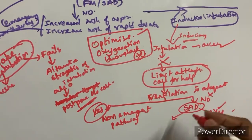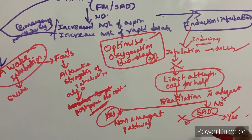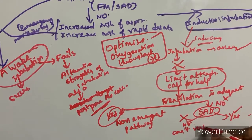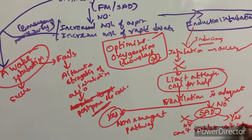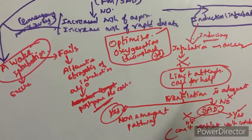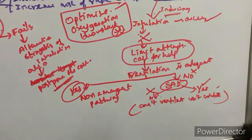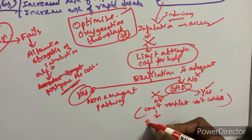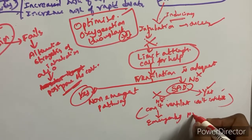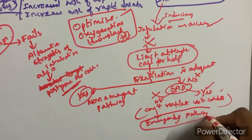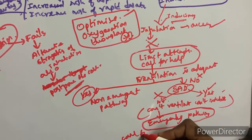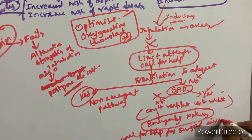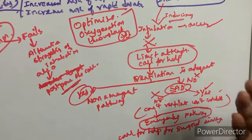If the supraglottic airway device also fails to provide adequate ventilation, you are now in a 'can't ventilate, can't intubate' situation. In this scenario, proceed to the emergent pathway — call for help for invasive surgical airway access.